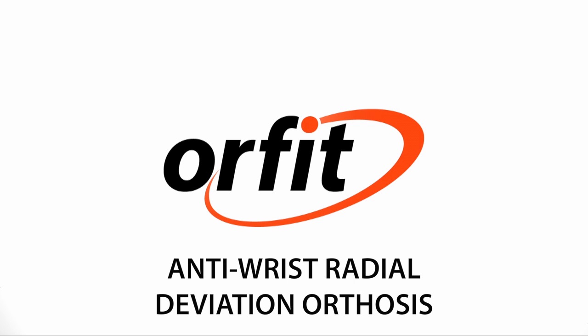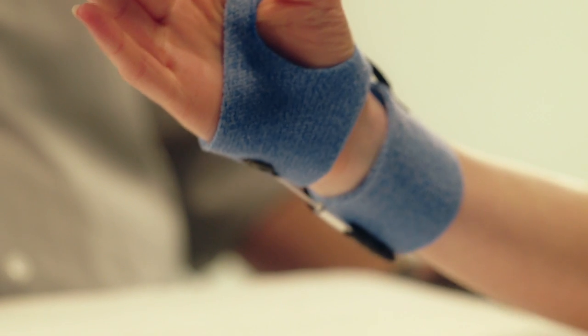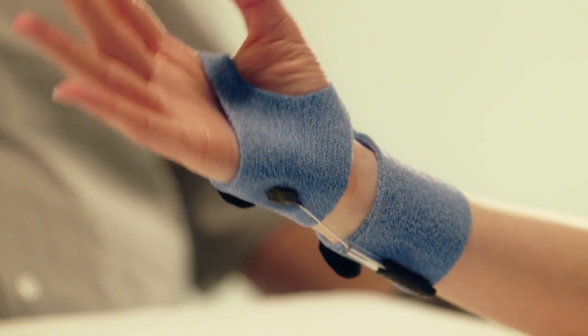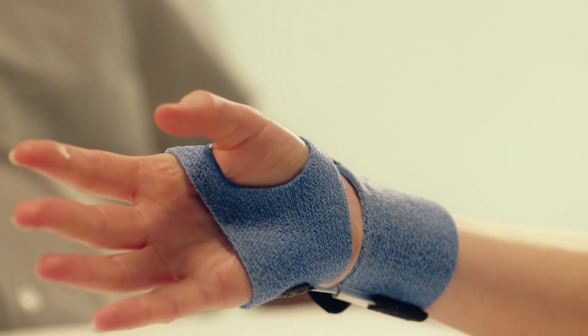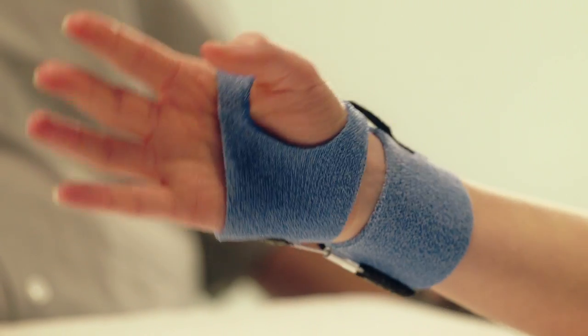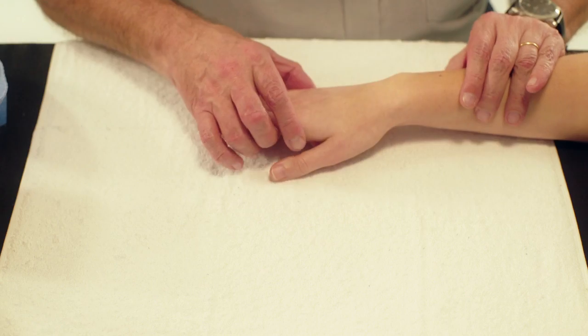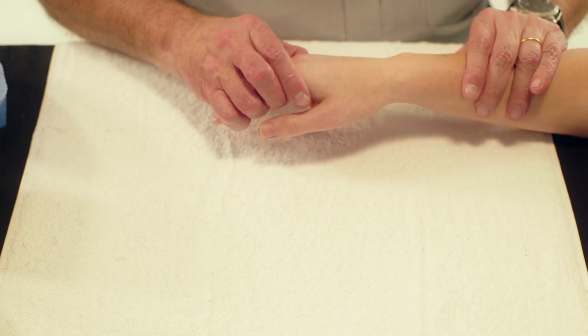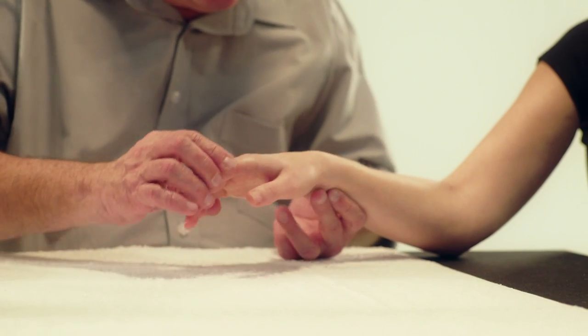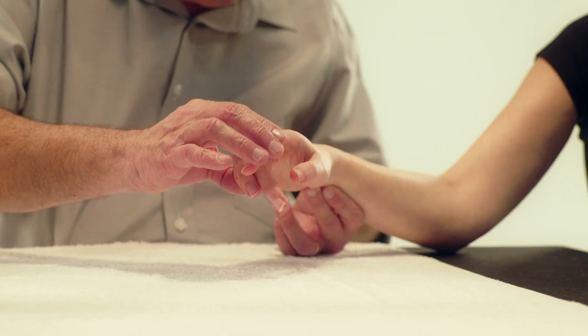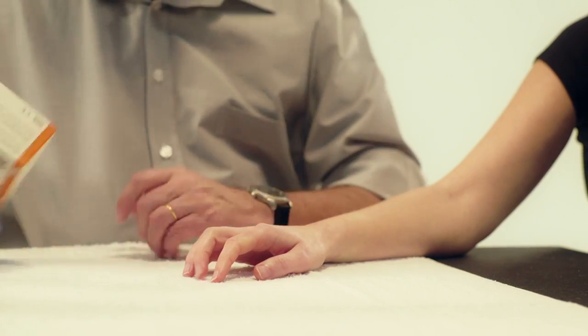Anti-wrist radial deviation orthosis. Here we will demonstrate how to fabricate an anti-wrist radial deviation orthosis with a dynamic pull on the ulnar side, used for example in case of rheumatoid arthritis of the wrist. To fabricate this two-portion orthosis...